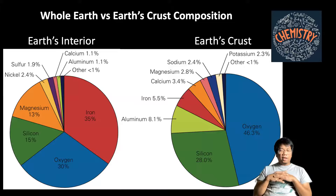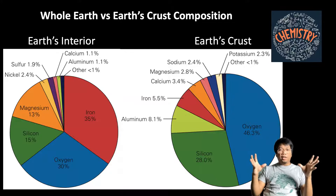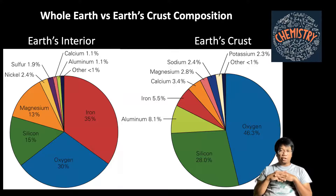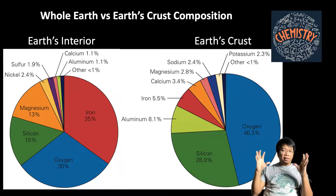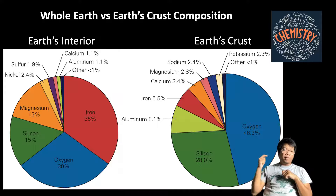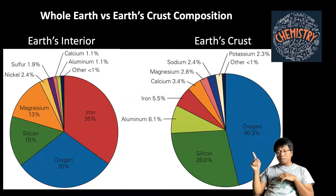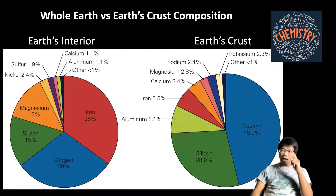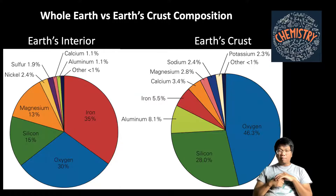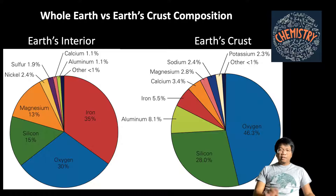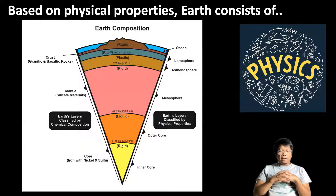This is just a comparison between the whole Earth composition and the Earth's crust composition. When we think about the whole Earth, iron would be number one, followed by oxygen and silicon. But when we focus more on the Earth's crust, it looks a bit different — oxygen is the most abundant element, silicon is the second, followed by aluminum and iron.